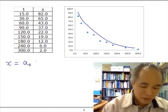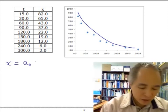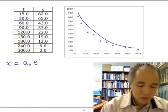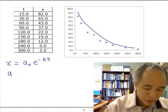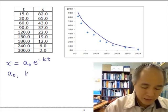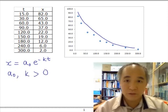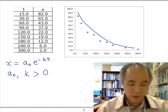Perhaps of the form X equals some a0, let's say that's the initial condition, times e to the power of negative kt. Where in this case, both a0 and k are positive constants, some kind of parameters.